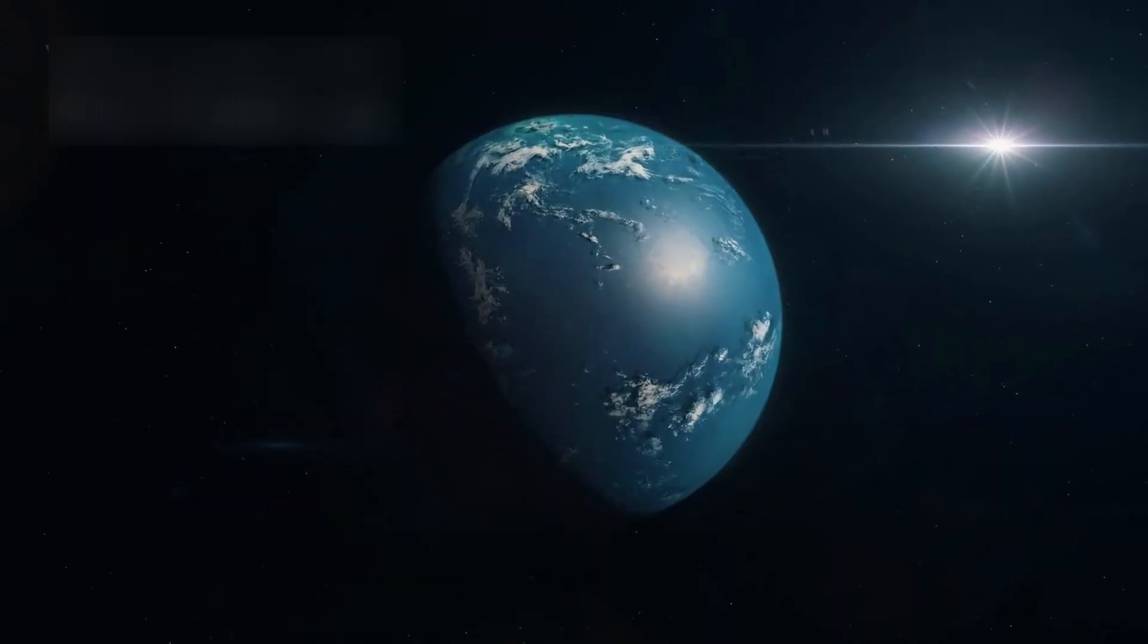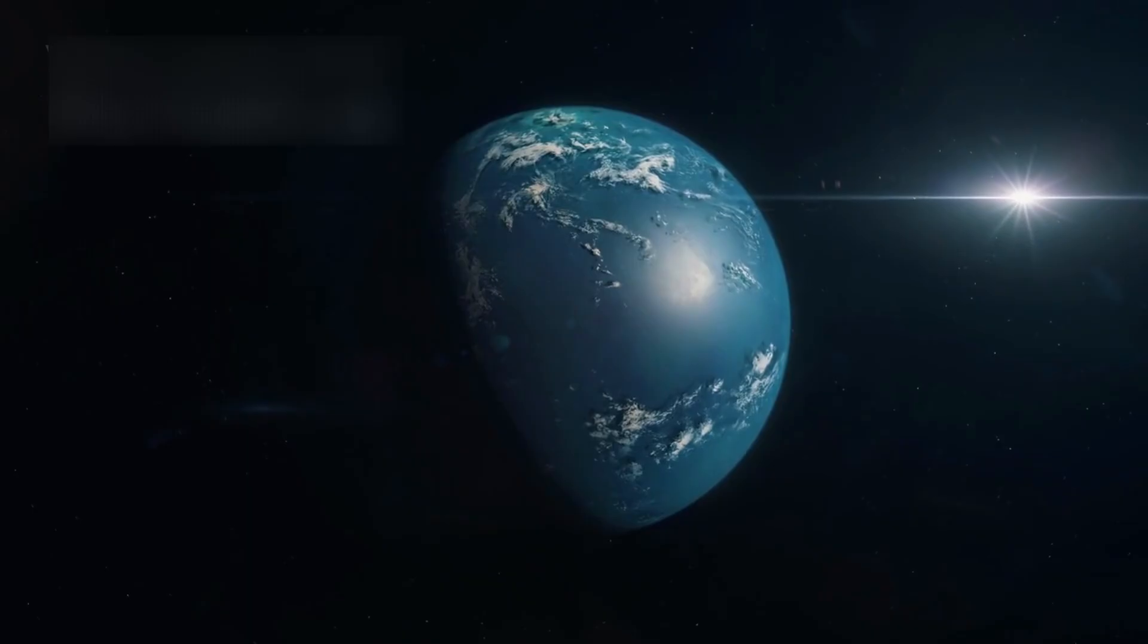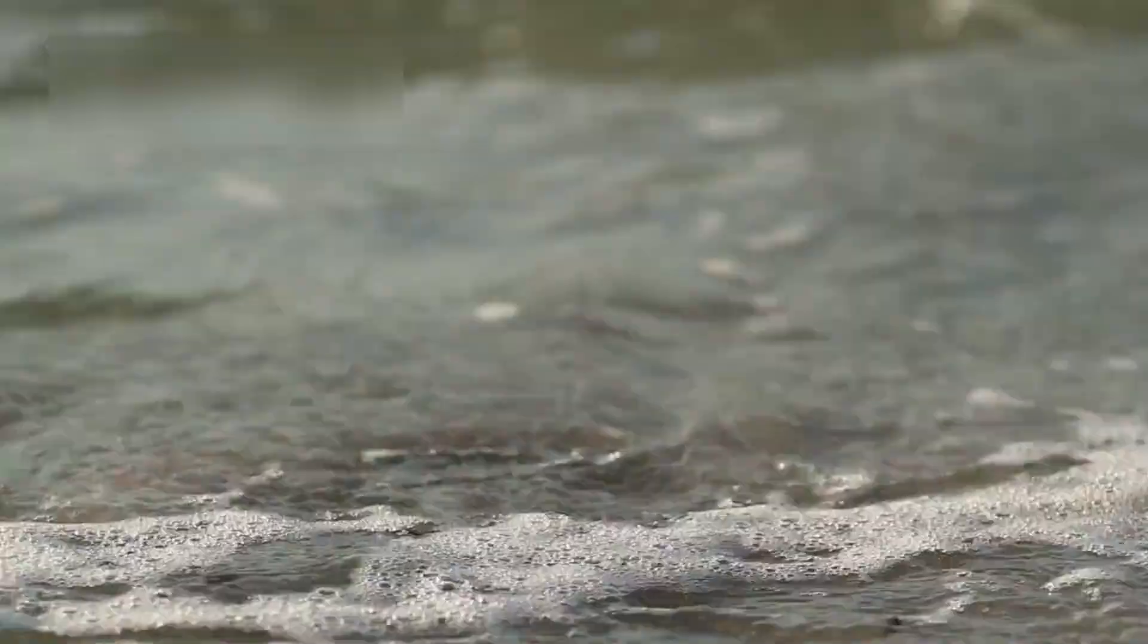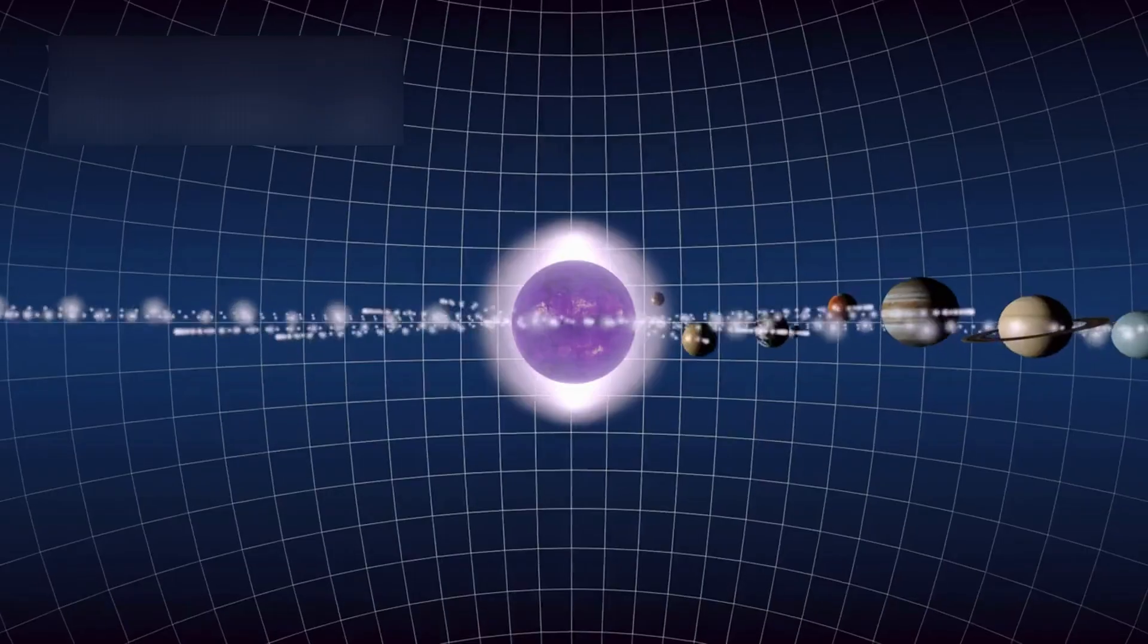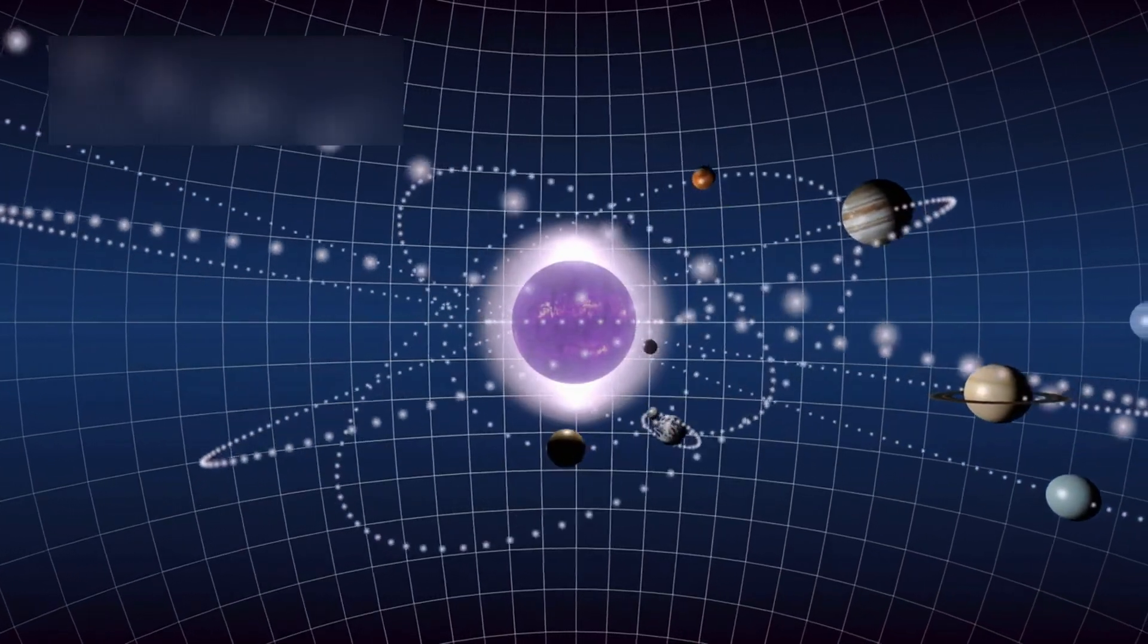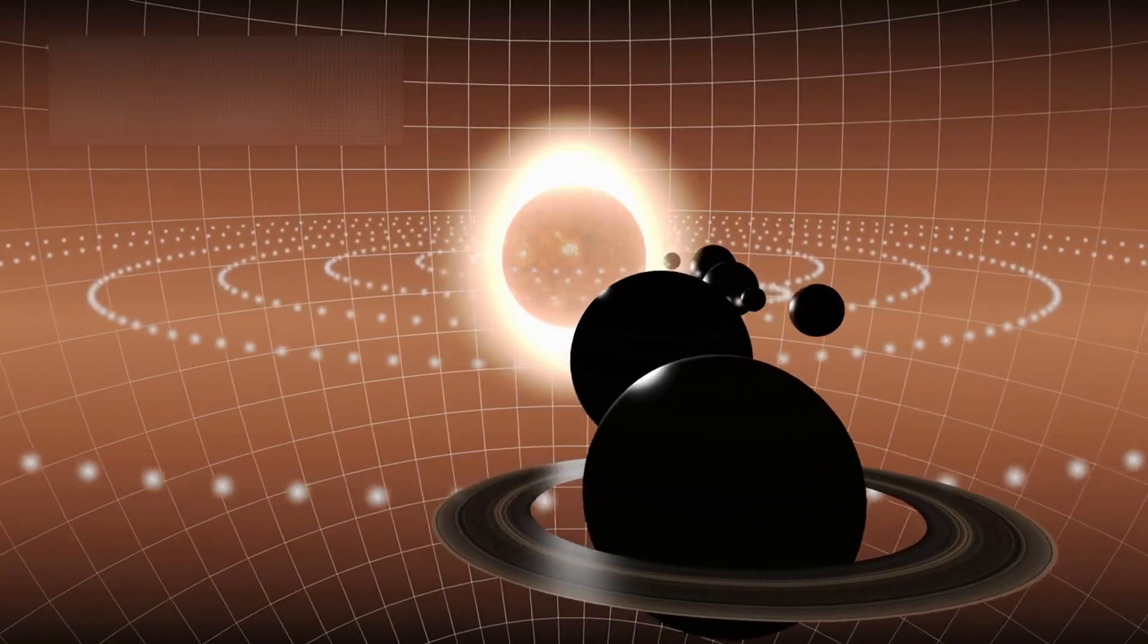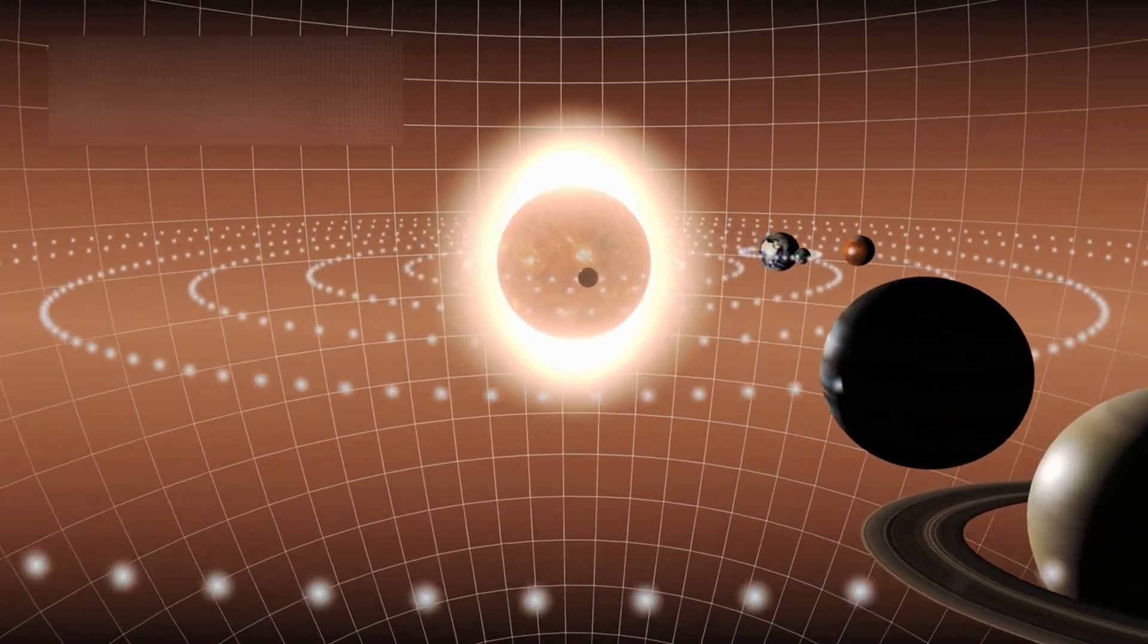They suggested that some exoplanets may not resemble Earth at all, yet still be capable of supporting life. Imagine worlds covered in vast global oceans, hidden beneath dense, hydrogen-rich atmospheres. These are the Hycean planets. The name itself is a blend of hydrogen and ocean.